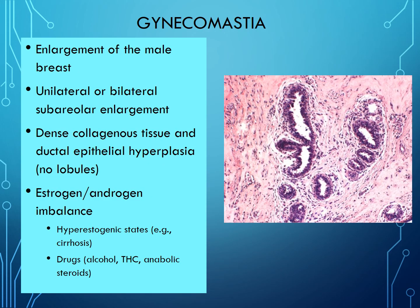Gynecomastia is enlargement of the male breast — it can be unilateral or bilateral, typically in the subareolar region. Under the microscope you see dense fibrosis and some epithelial hyperplasia, but notice there are only terminal ducts — no lobules, because this is a male breast. Many things can cause gynecomastia, including exogenous estrogens and androgens, as well as alcohol and steroids.